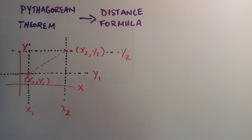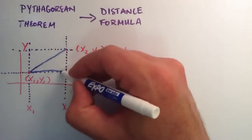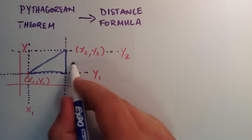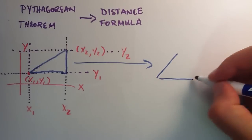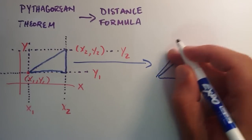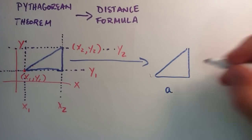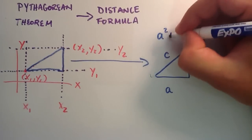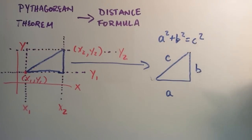We're going to look at the triangle I just drew here — I'll highlight it in blue — and apply the Pythagorean theorem to it. Let's redraw that blue triangle right here. The Pythagorean theorem tells us that a squared plus b squared equals c squared. We're going to use it to find the distance formula.